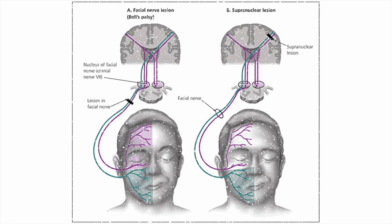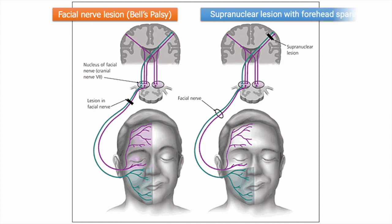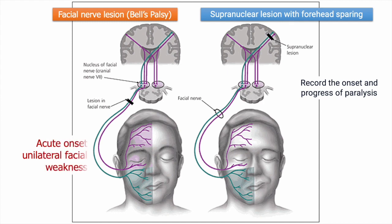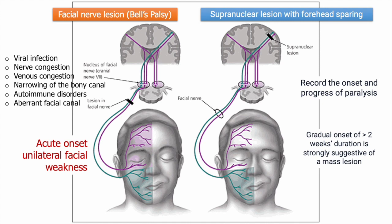Inflammation of the facial nerve at the geniculate ganglion leading to compression, ischemia, and demyelination is believed to cause Bell's palsy, or idiopathic facial palsy. Depending on the level of nerve injury, it can be classified as central or peripheral. In the central type — upper motor neuron lesion — there is paralysis of the lower part of the facial muscles on the opposite side of the lesion; the upper facial muscles are normally spared due to bilateral cortical connections. In the peripheral type — lower motor neuron lesion — there is total facial paralysis from the same side of the lesion. Peripheral lesions produce a more severe type of facial paralysis compared to central lesions, but central lesions may represent serious brain pathologies.